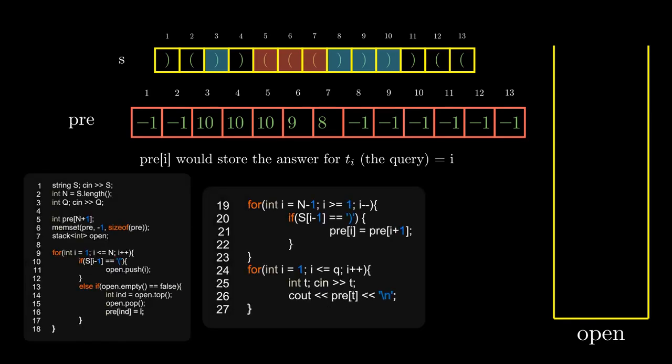So here is the code for it. Pre is our pre-computed array, s is our string, and we have taken a stack open to keep track of indices of opening brackets. We iterate from 1 to n, that is over all characters of the string. If that character is an opening bracket, we push it onto the stack. We push its index onto the stack.